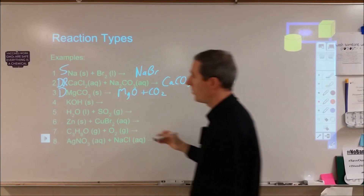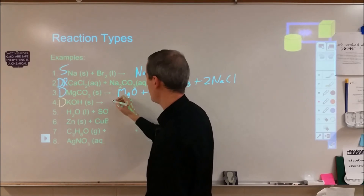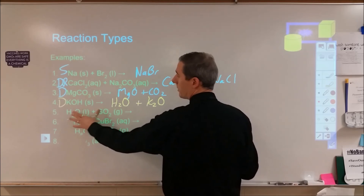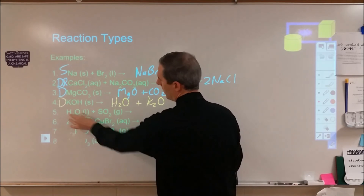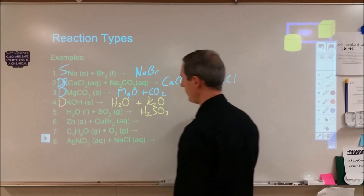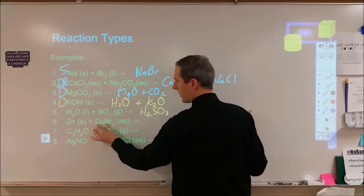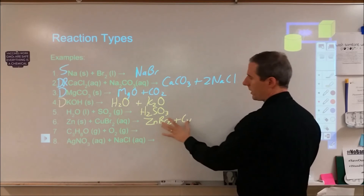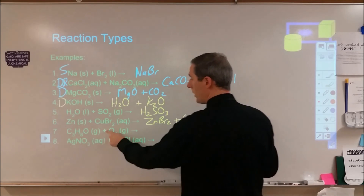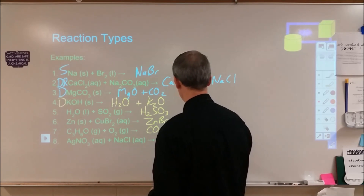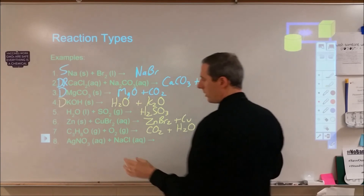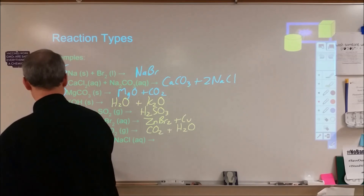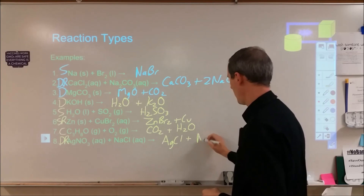KOH is just one compound, so it's decomposition. I'm looking for a gas — it's going to be steam — so from there I'm going to form potassium oxide and water. Water plus SO2 is compound plus compound, but it's the exception where it's water plus something containing oxygen, so I'm going to be making an acid: H2SO3. Zinc plus copper(II) bromide is element plus compound — metallic element — so zinc and copper trade places. A hydrocarbon burning is going to be combustion, producing CO2 and water. The last one, compound plus compound, is a double replacement — we end up forming silver chloride precipitate and sodium nitrate.